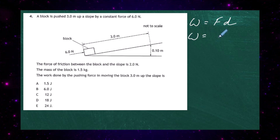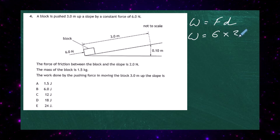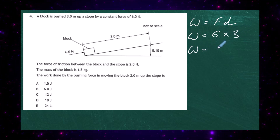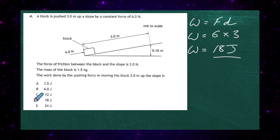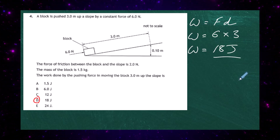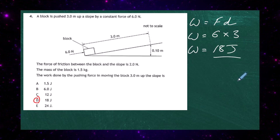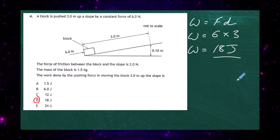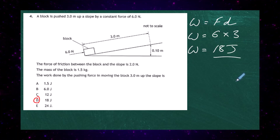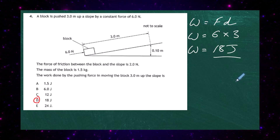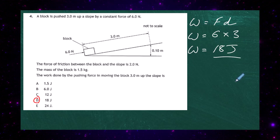Work done equals force multiplied by distance. The pushing force is six newtons and the distance is three metres, so the work done is 6 × 3 = 18 joules. Be careful: the mass and friction force are distractors here — you're asked for work done by the pushing force only. The correct response for question four is D.